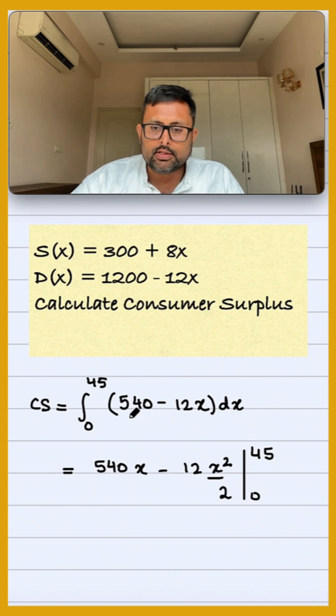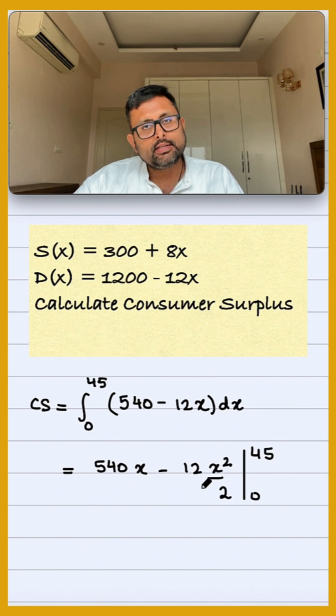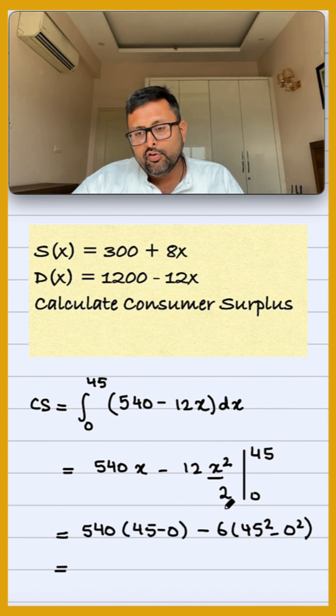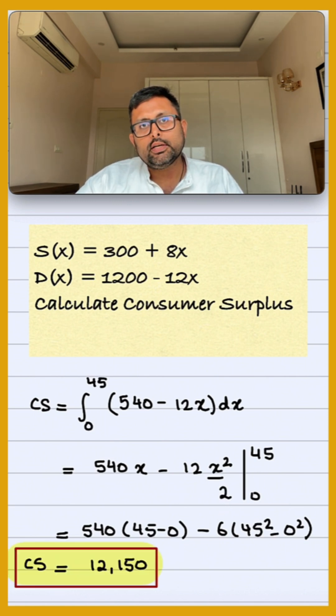we find the expression 540x - 12 times x² by 2, which equals 540x - 6x². Evaluating the definite integral from 0 to 45 gives us a consumer surplus of 12,150.